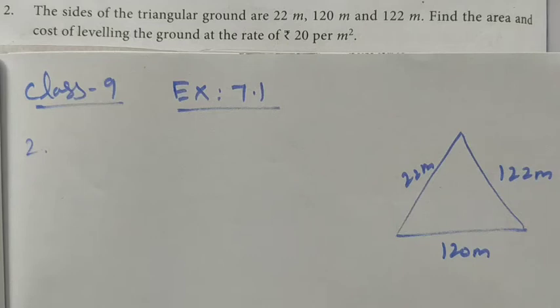Hi students, Class 9, Exercise 7.1, Question number 2. The sides of the triangular ground are 22 meters, 120 meters, and 122 meters. Find the area and cost of leveling the ground at the rate of rupees 20 per meter square.